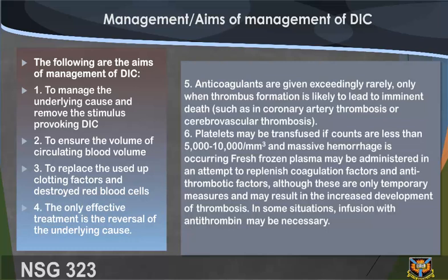The aims of management of DIC are: 1. To manage the underlying cause and remove the stimulus provoking DIC. 2. To ensure adequate volume of circulating blood. 3. To replace used clotting factors and destroyed red blood cells. 4. The only effective treatment is reversal of the underlying cause. 5. Anticoagulants are given exceedingly rarely, only when thrombosis formation is likely to lead to imminent death such as in coronary artery thrombosis or cerebrovascular thrombosis. 6. Platelets may be transfused if counts are less than 5,000 to 10,000 per mL and massive hemorrhage is occurring.